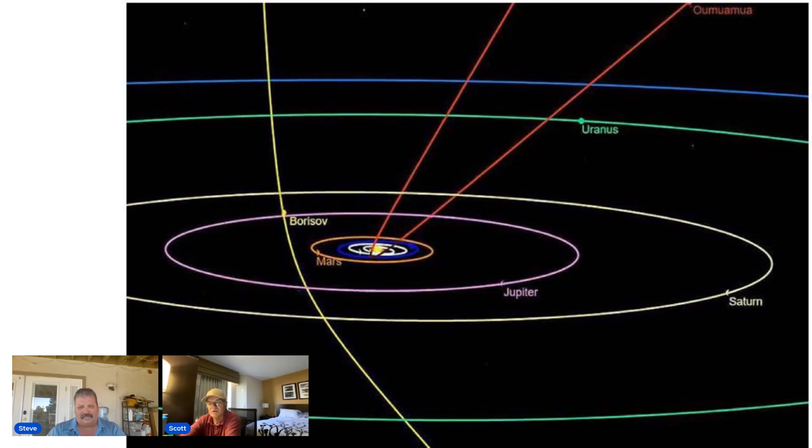The first confirmed interstellar visitor was in 2017, so not that long ago. Right, that first one was Borisov, and you can see it's in the green, going from the top to the bottom middle. And the one we're talking about today, Oumuamua, is a red. It looks like a hyperbola, a red one, going at the top, down to the center of the picture, and then back to the top.